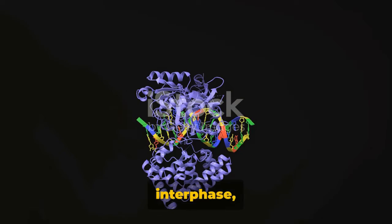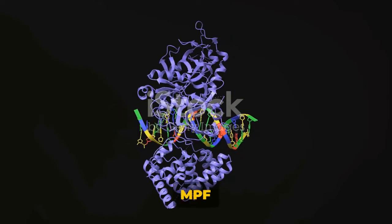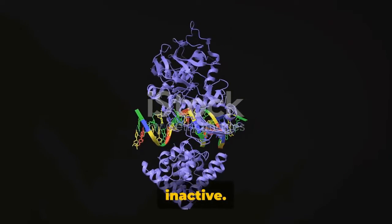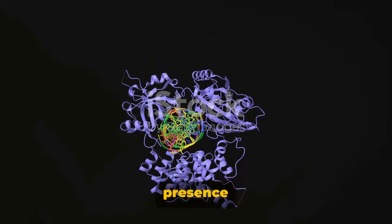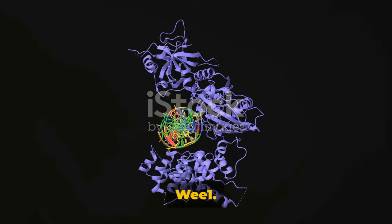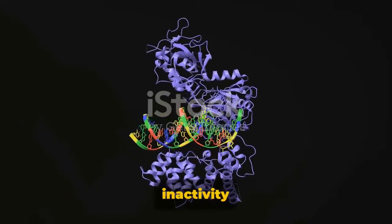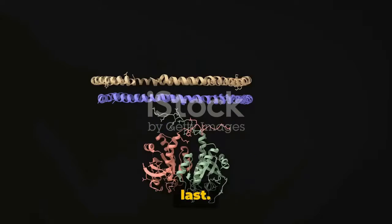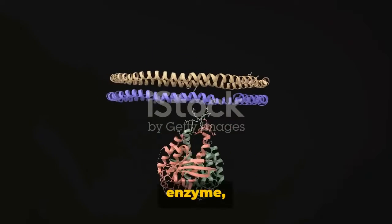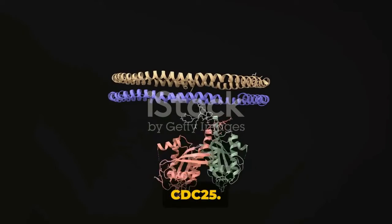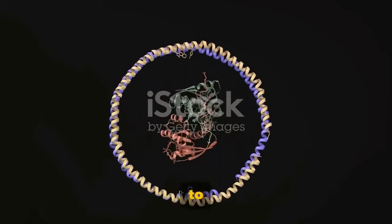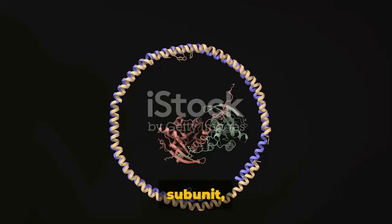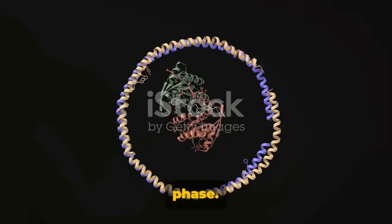During the cell's interphase, the inert subunit of MPF remains inactive. This dormancy is due to the presence of an enzyme known as V1. However, this inactivity doesn't last. The activation of the MPF unit is triggered by another enzyme, CDC-25. This results in the cyclin molecule binding to the kinase subunit, sparking the start of the M phase.